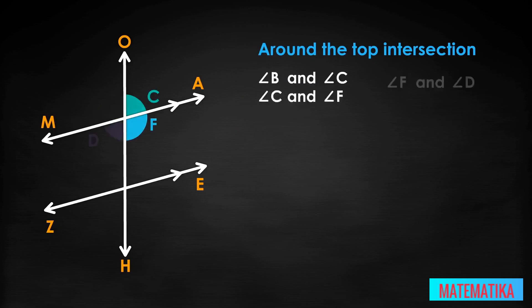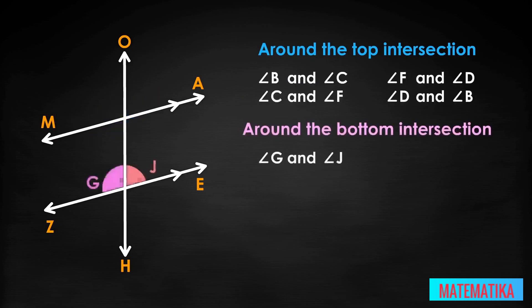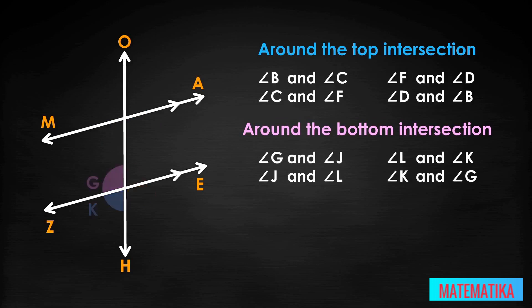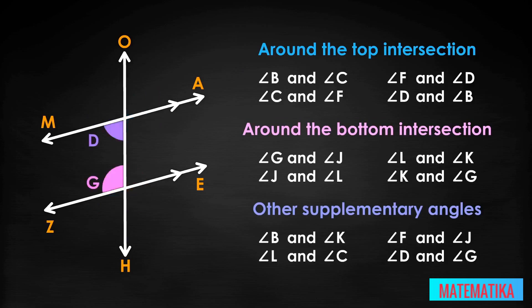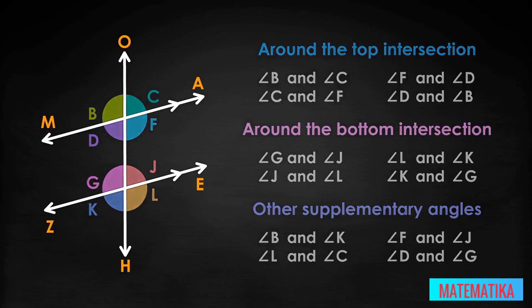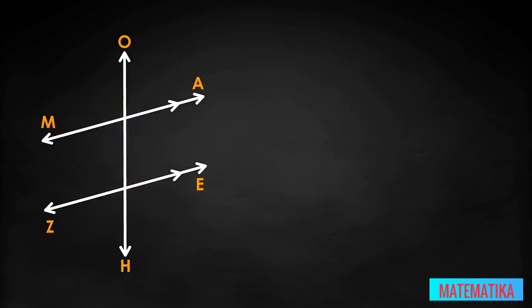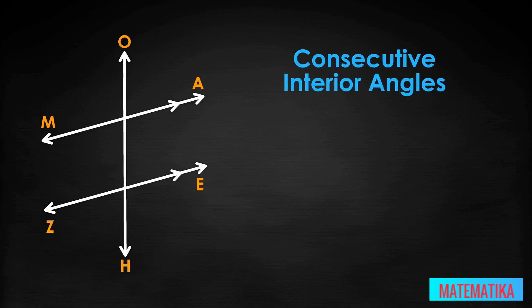There are supplementary angles around the top intersection, around the bottom intersection — those should have been obvious — but there are also four other supplementary angle pairs. These four pairs are supplementary because the transversal creates identical intersections for both lines, only if the lines are parallel. The last two supplementary angles are interior angle pairs, called consecutive interior angles.